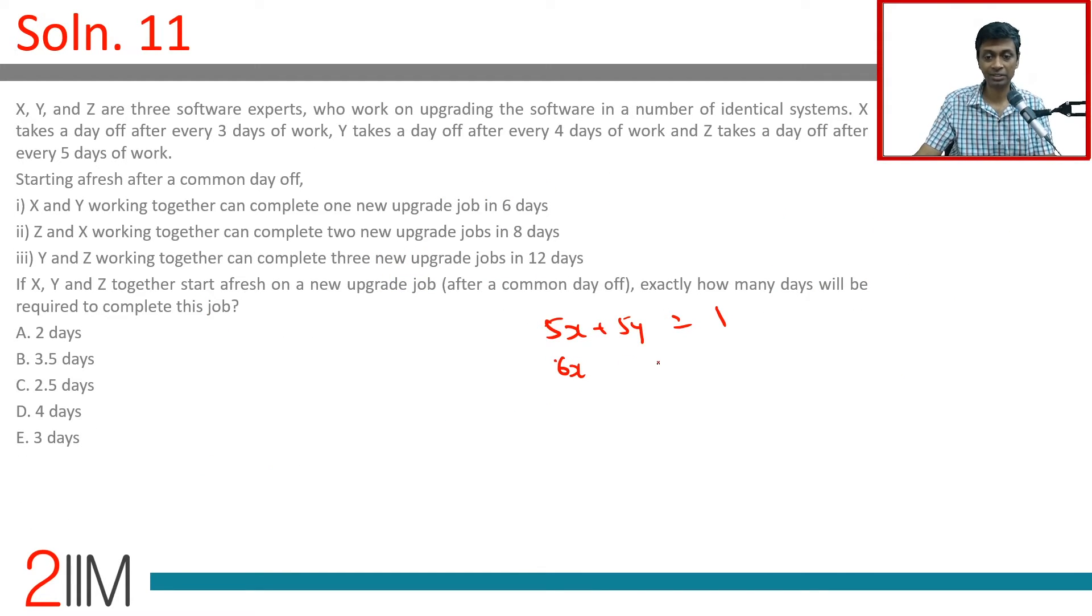Six X plus seven Z equals two. Ten Y plus ten Z equals three. Find X, Y, and Z, and then we should be good to go.